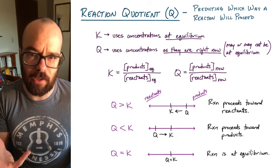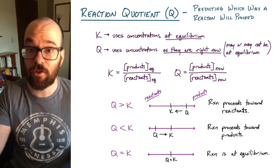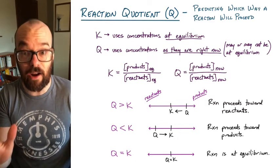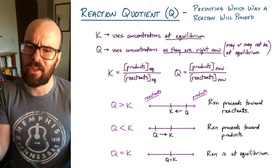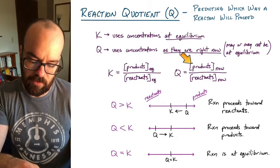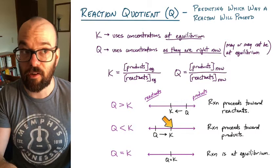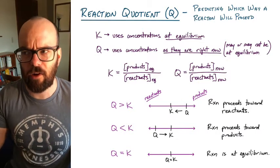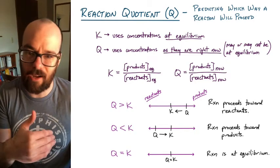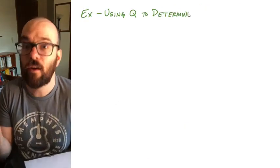When do you know you need to use Q? In an AP Chemistry problem, it usually won't say 'calculate Q.' You need Q whenever you're given concentrations right now and want to know if the reaction moves toward reactants or products. If there are no products yet — if product concentrations are zero — you don't need to calculate Q. Q would equal zero, and there's only one direction it can go: toward the products. But when you have some of everything and can't tell just by looking, that's when you calculate Q.